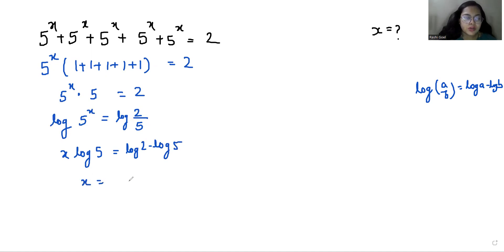So x equals (log 2 - log 5) / log 5. We can split this: x equals (log 2 / log 5) minus (log 5 / log 5). So x equals (log 2 / log 5) minus 1.